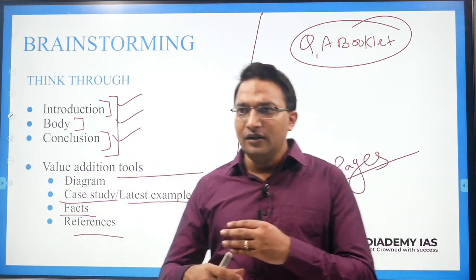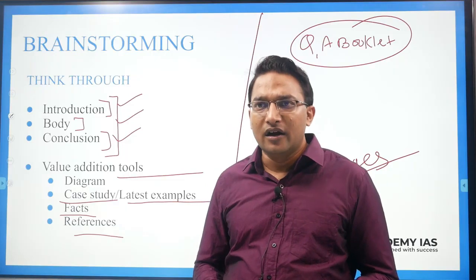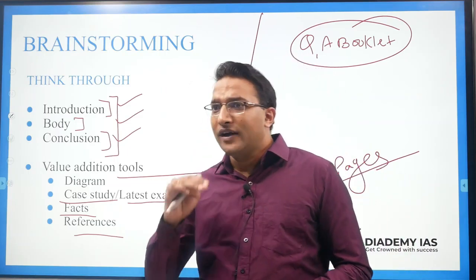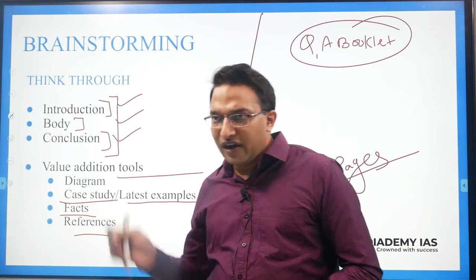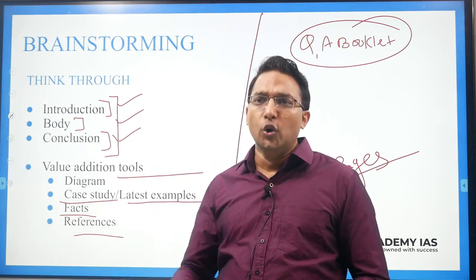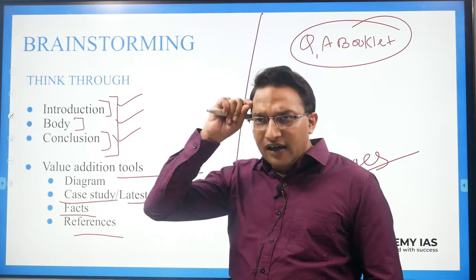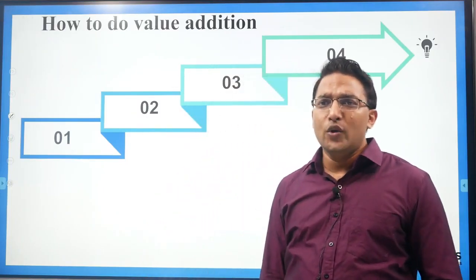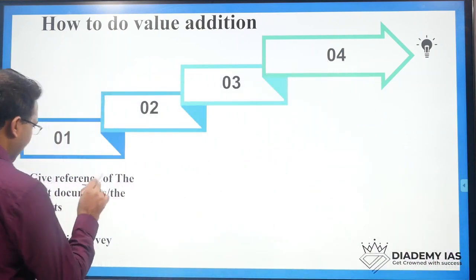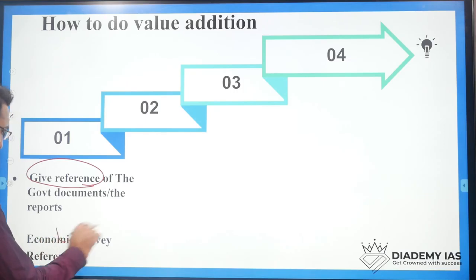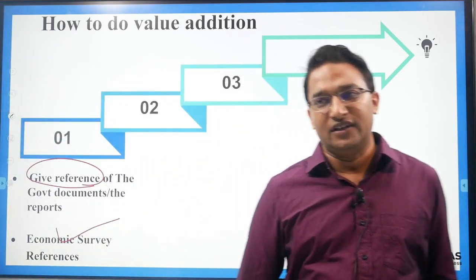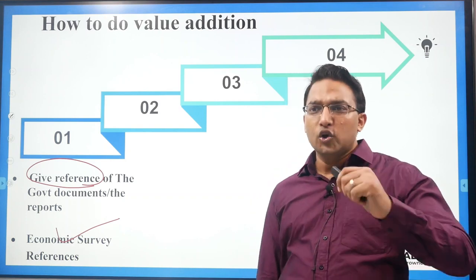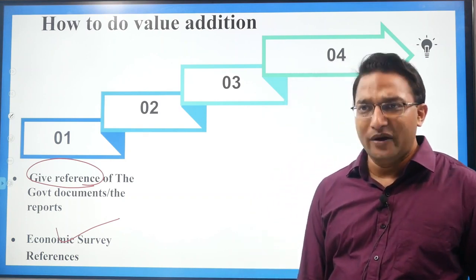In the UPSC answer booklet, rough pages at the end are specifically given for brainstorming — use them. Initially it takes time to think through all seven or eight dimensions, but slowly your mind will automatically start collecting relevant things from your knowledge base: diagrams, case studies, facts, and references. In the beginning it will be conscious; over time it becomes automatic.